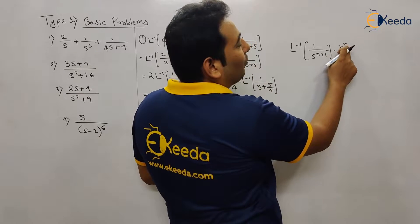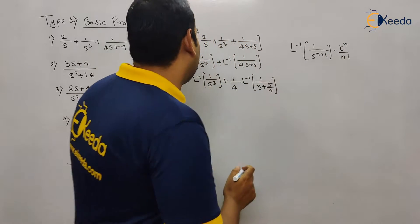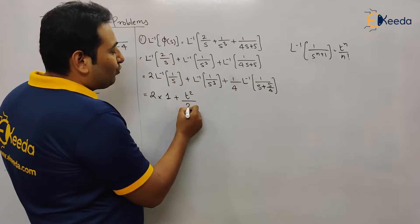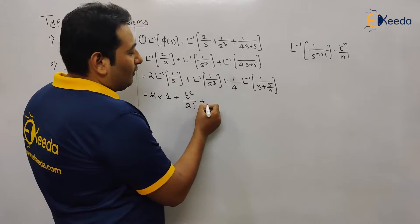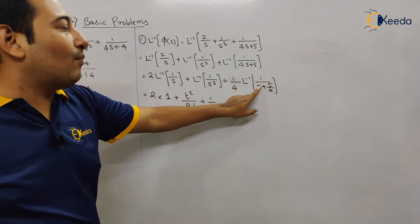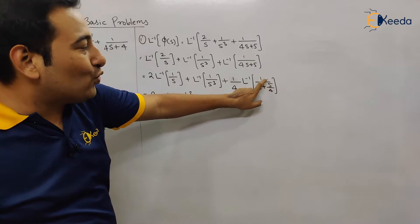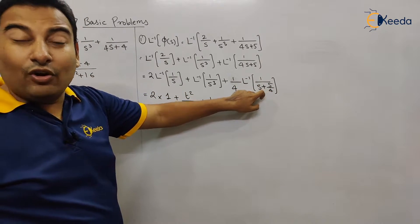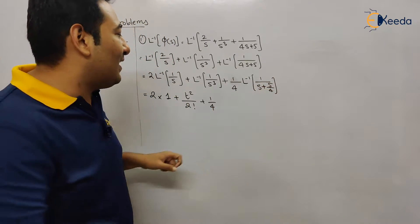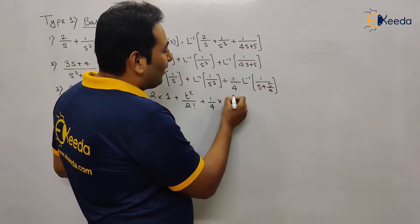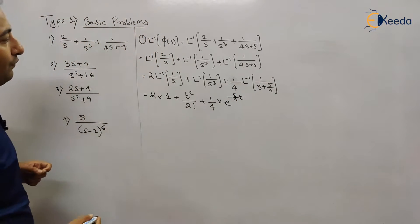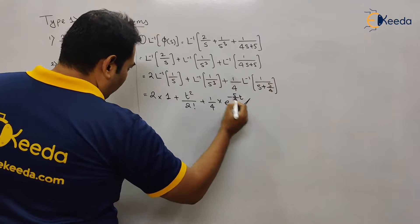The formula is t^n / n!. We subtract 1 and take the factorial. So for s³ this will be t² / 2!. Next, this is 1/4. What about the remaining term? This is 1/(s+a) form, and the formula for 1/(s+a) is e^(−at). So this is a = 5/4, giving e^(−5t/4). This is the solution of the first problem.